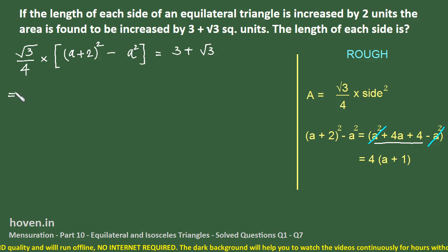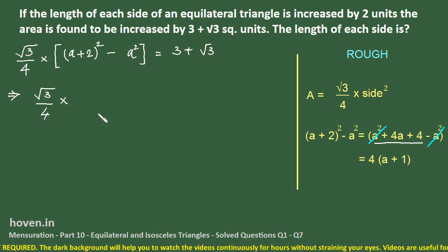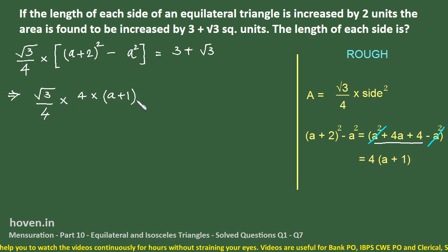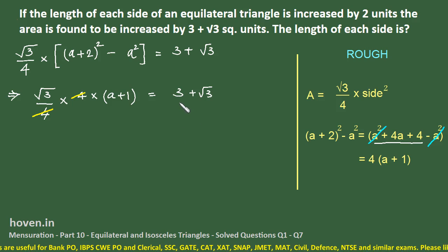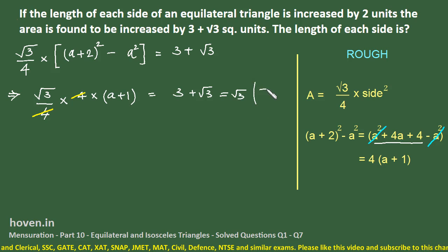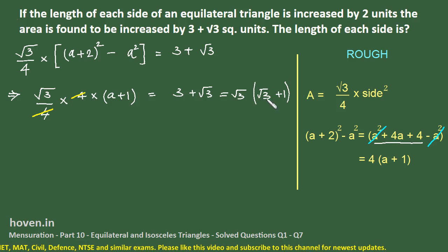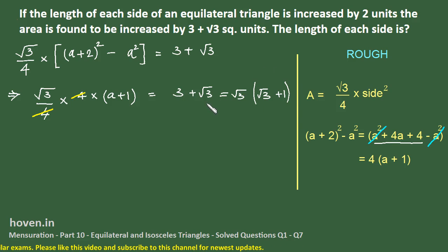Coming back, the left side simplifies to 4(a+1). So we can write: (√3/4) × 4 × (a+1) = 3 + √3. We cancel the 4, and rewrite the right side as √3 × (√3 + 1), since √3 × √3 = 3 and √3 × 1 = √3.